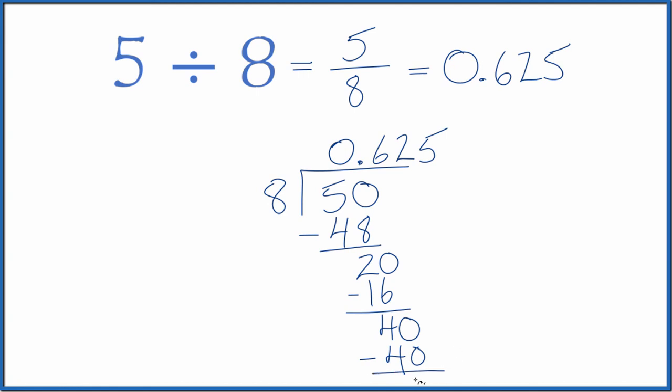We subtract, we don't have any remainder. So when we divide five by eight, we get 0.625 when we do it longhand or as a fraction, or if we do it on the calculator.